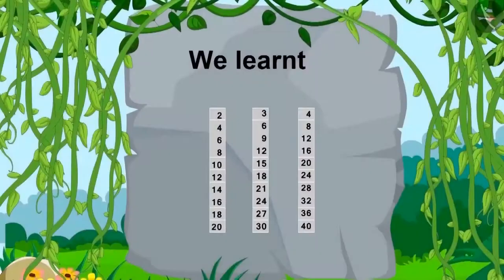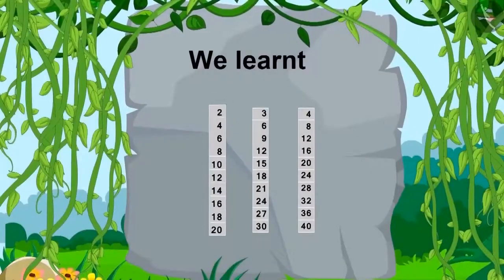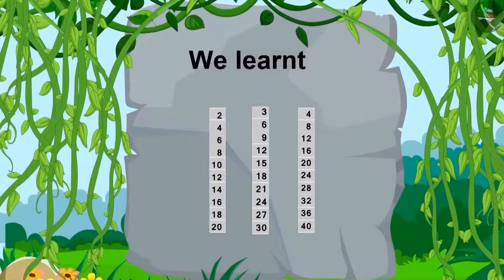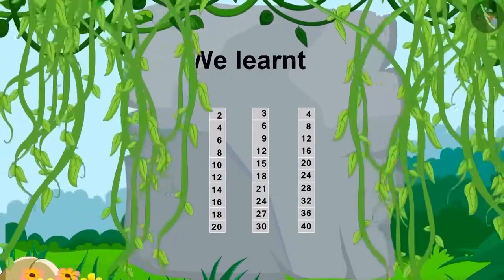Bunny, Kittu and Babban searched for a way and came out of the jungle. Children, in this lesson we learned the tables of two, three and four.